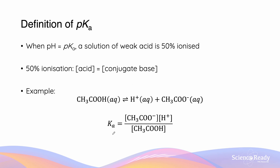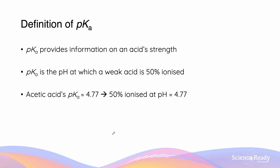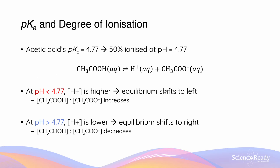pKa provides information on acid strength and is the pH at which the weak acid is 50% ionized. The pKa of acetic acid is 4.77, meaning 50% is ionized at pH 4.77. When pH is less than 4.77, the H⁺ concentration is higher and the equilibrium shifts to the left (Le Chatelier's principle). When pH is greater than 4.77, H⁺ concentration is lower and the equilibrium shifts to the right.